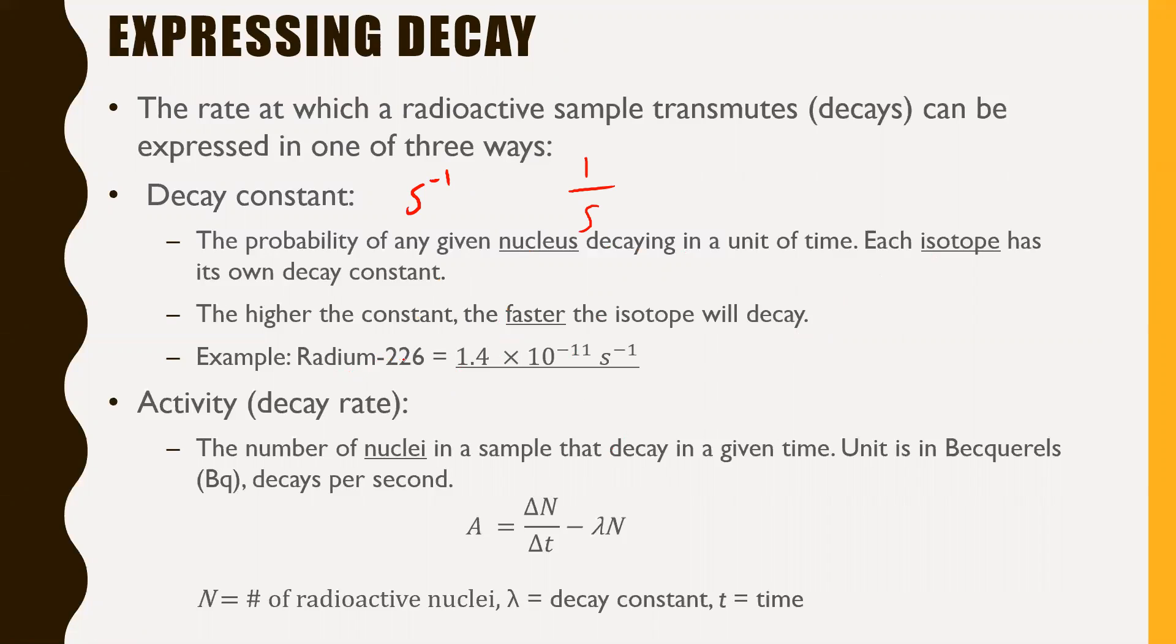For example, radium-226 has a decay constant of 1.4 times 10 to the negative 11 inverse seconds. What that means is, if you have a whole sample of radium-226 with billions or trillions of nuclei, one of them will decay every 1.4 times 10 to the negative 11 seconds. So in not very much time, literally just like a trillionth or quadrillionth of a second, you'll see one of your nuclei of radium-226 decay.